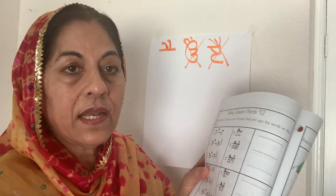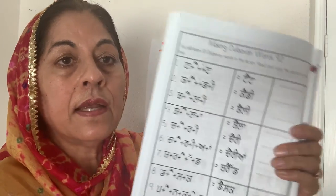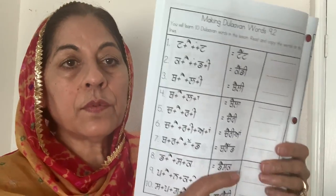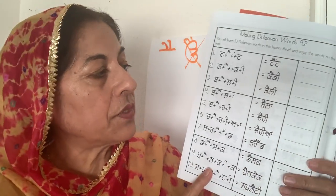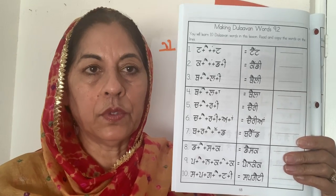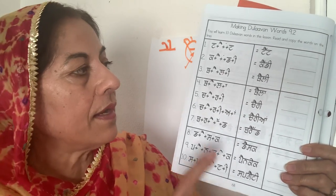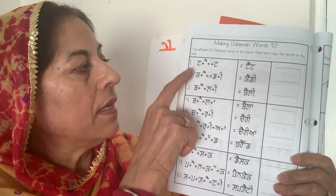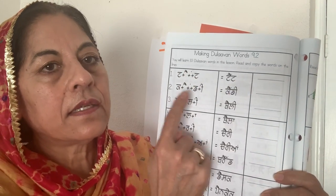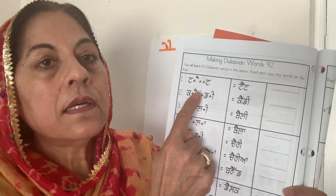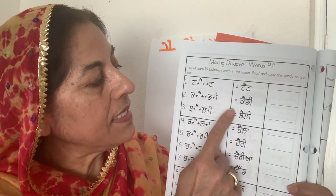Now we will learn ten words with this matra. Most of the words on this page you already know — they are the same words we use in English, called borrowed words. So we can use the same words in English and Punjabi. The first word is 'Tent.' The second is 'Candy' — K, A, N, D — Candy.